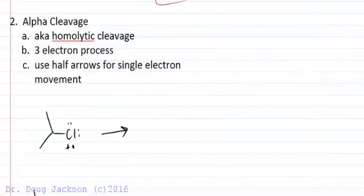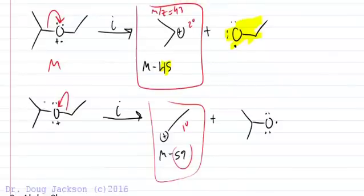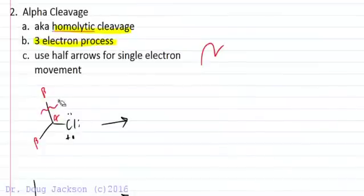Alpha cleavage is also known as homolytic cleavage and it's a three electron process. We're going to use half arrows to indicate single electron movement of radicals here. And so if we're doing alpha cleavage, here's alpha away from the ion, there's the alpha carbon, there's a beta carbon, there's a beta carbon. So alpha cleavage occurs between the alpha and beta positions away from the functional group. And it's sometimes indicated by a squiggly line there wherever the cleavage occurs.